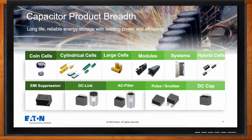A comprehensive range of supercapacitors suitable for backup or auxiliary power is available, including coin cells, small and large cylindrical cells, two-cell and multi-cell modules with built-in balancing circuits, hybrid supercapacitors, and supercapacitor systems. Eaton has also recently introduced a diverse range of film capacitors including DC-link capacitors, AC filter capacitors, pulse or snubber capacitors, and EMI suppression capacitors, allowing for tailored solutions to meet specific performance requirements.